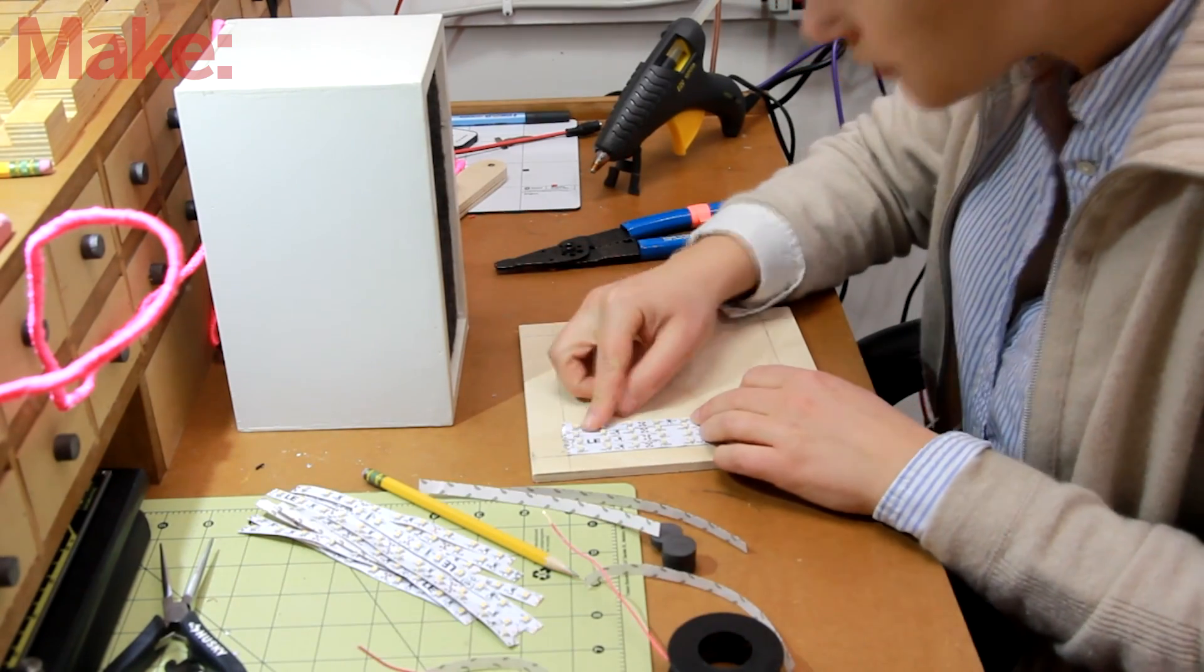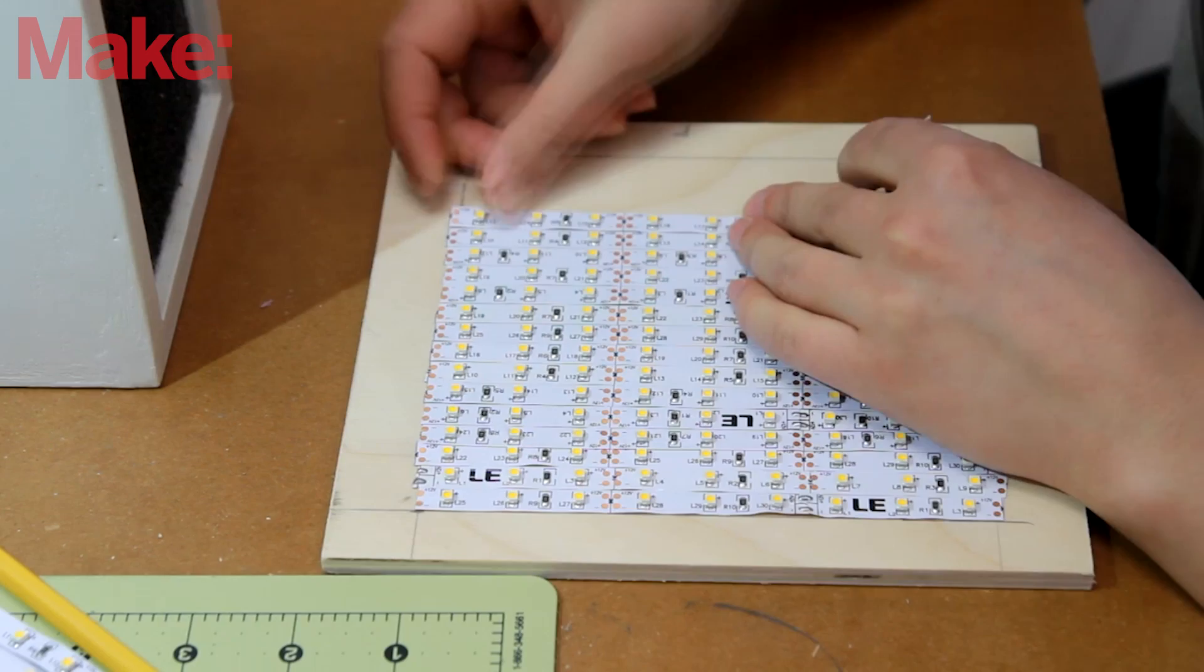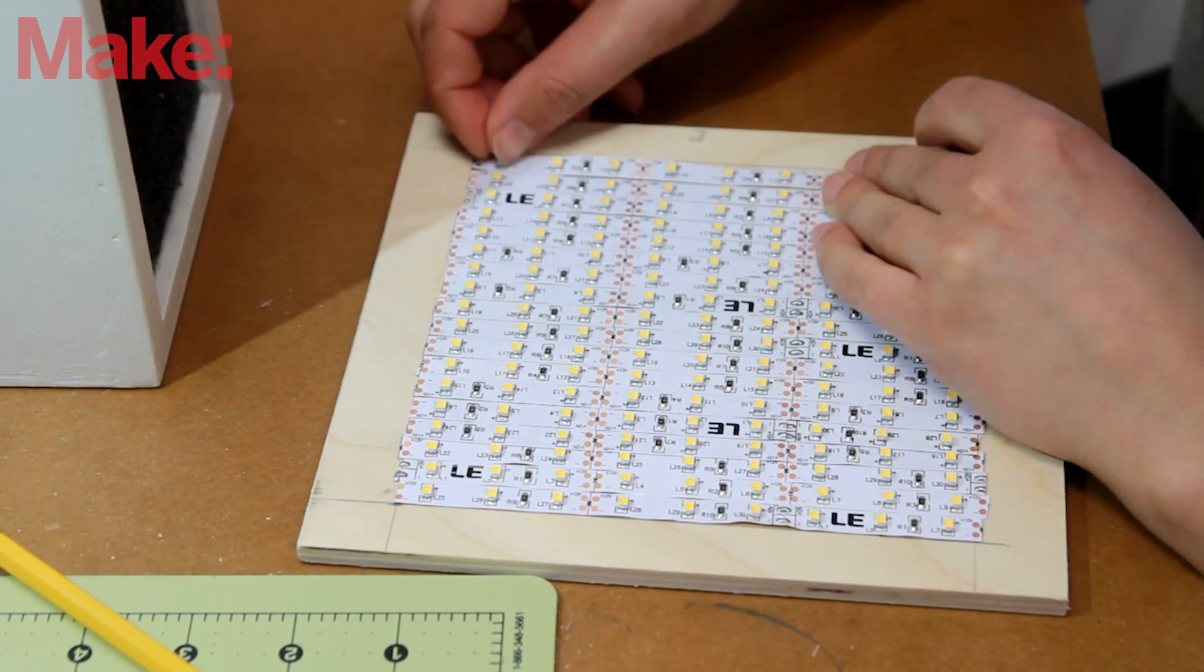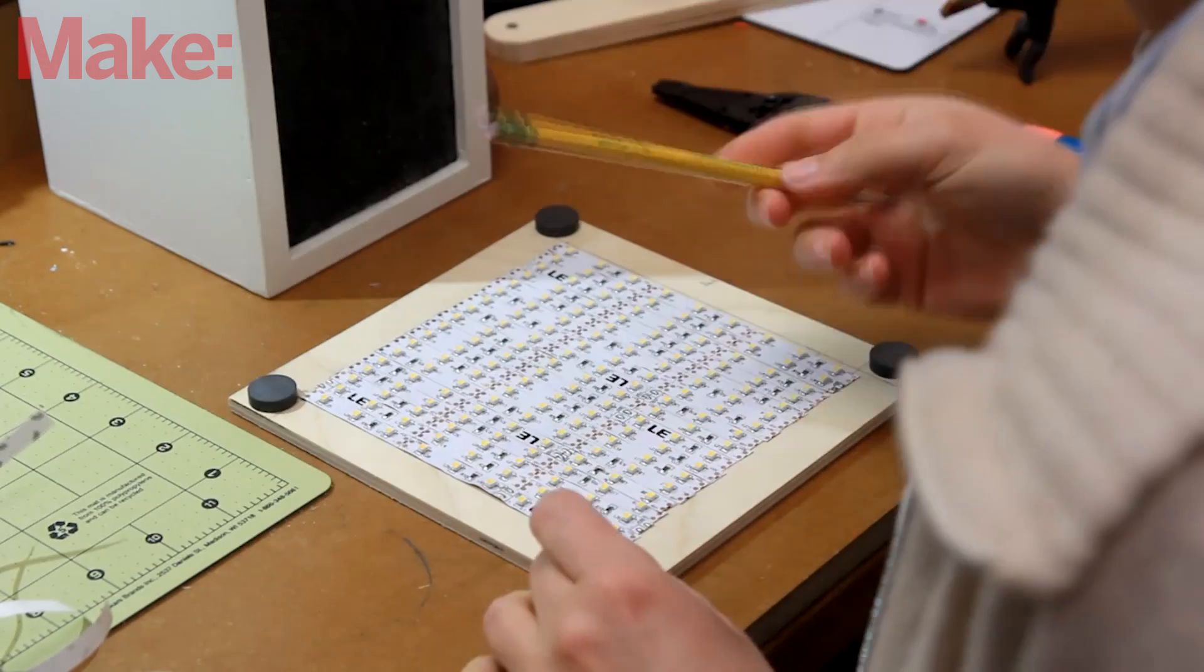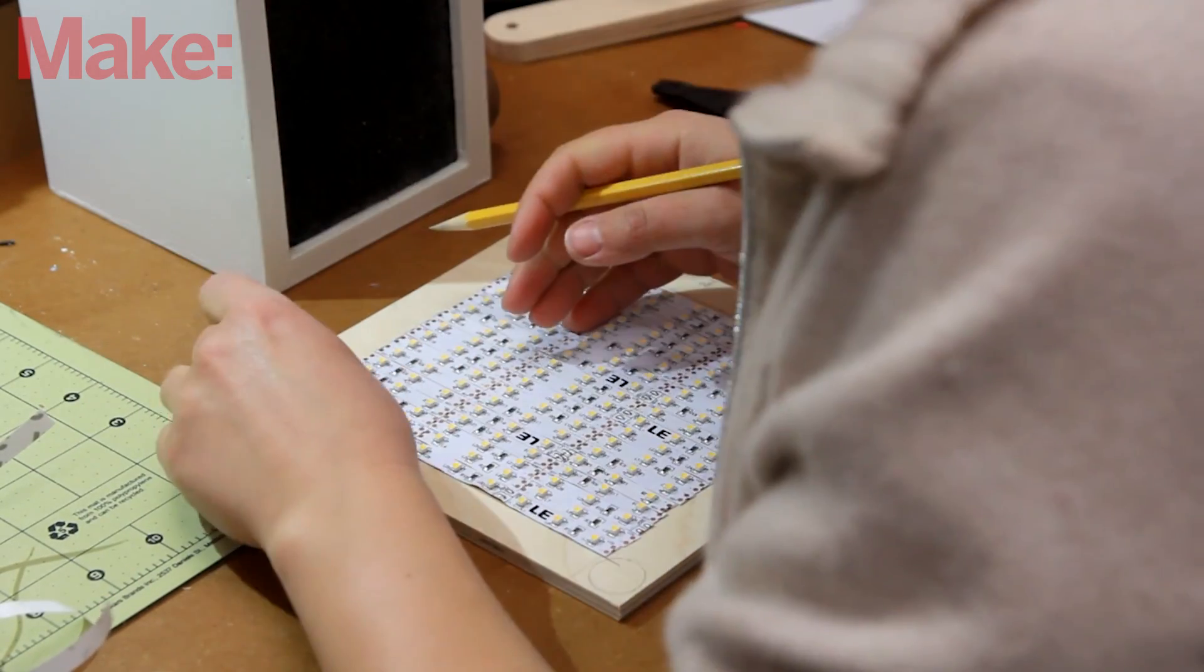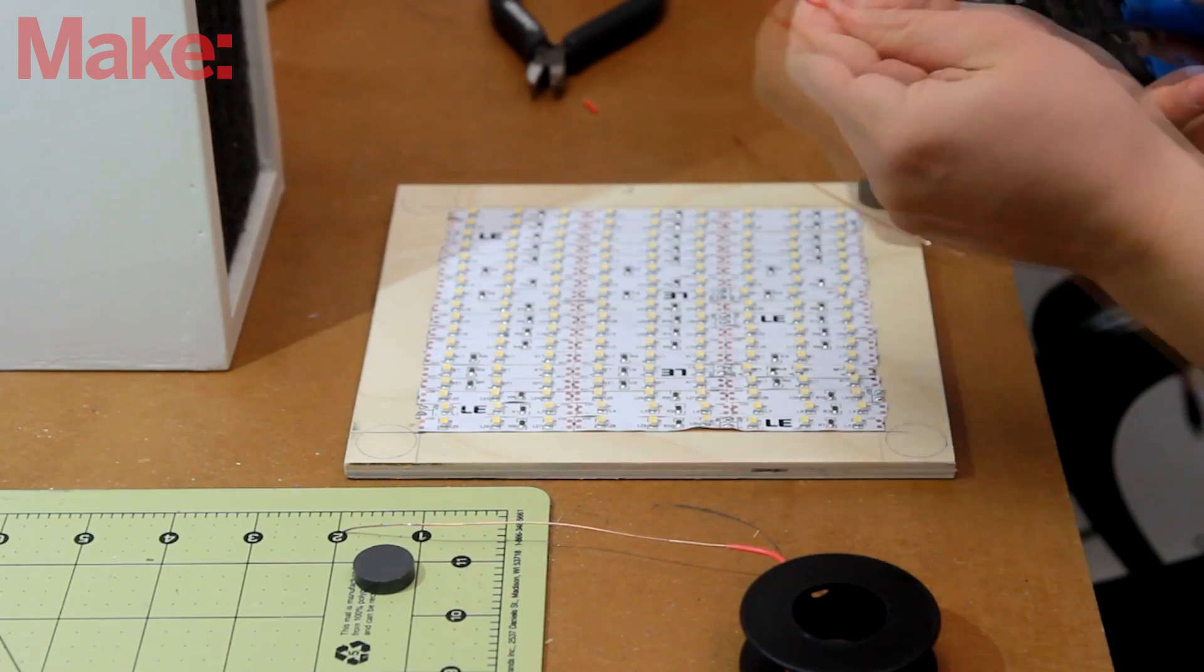Let's move on to attaching the strip lights to the plywood panel here. I'm simply removing the tape on the back side and sticking them in a row. On the corners of the panel, I'm going to glue down some magnets, so just marking out where they'll be going. Then I'm stripping some wire and hot-gluing it down.